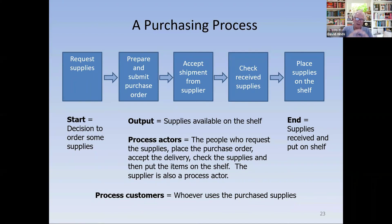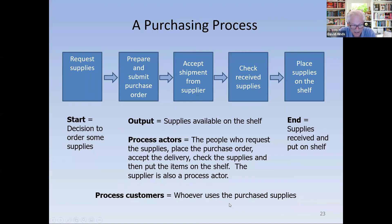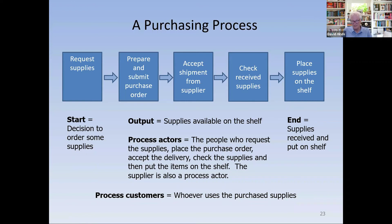The process actors are critical because they're the ones doing the work who need to think about how to improve it. The process customers are whoever uses those purchased supplies — in a law firm ordering office supplies, it's whoever needs those office supplies; in a medical dental clinic, it's whoever needs those dental supplies. So the process customer may be an external customer, but often it's an internal customer.